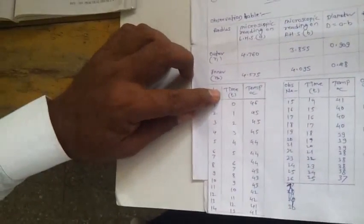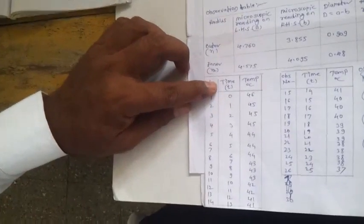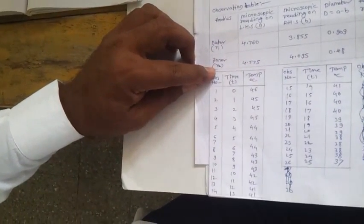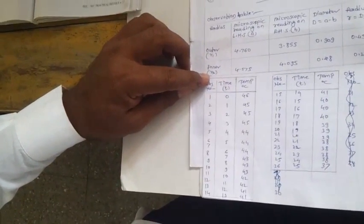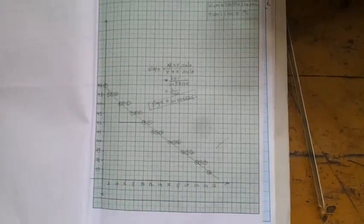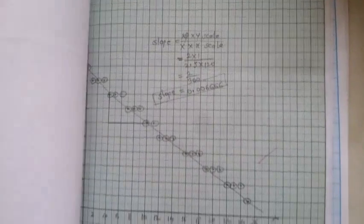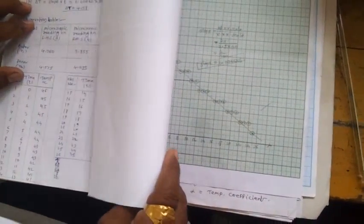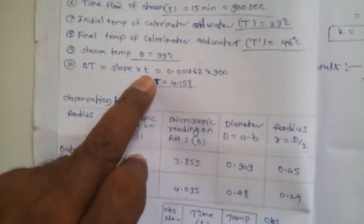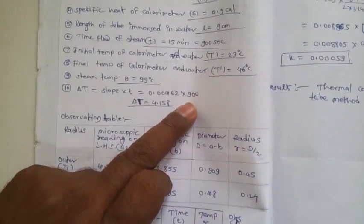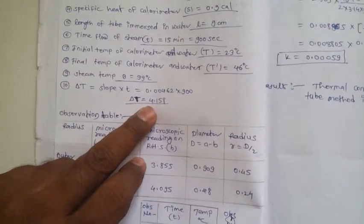After 15 minutes, that means after 900 seconds, we take observations of time against temperature. We start the stopwatch and take readings for 25 minutes for cooling, as shown in the observation table. From this table, we plot a graph of temperature versus time. Then we calculate the slope of the graph, which is 0.0046, into T (900 seconds). Therefore, delta T is equal to 4.158.